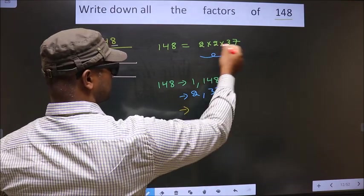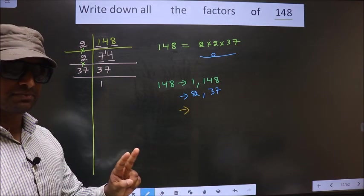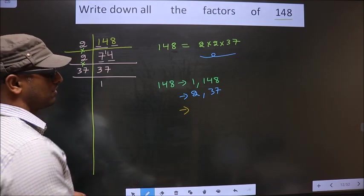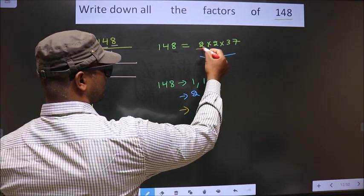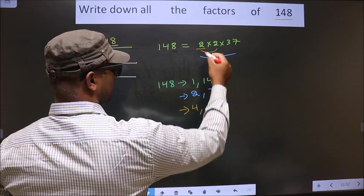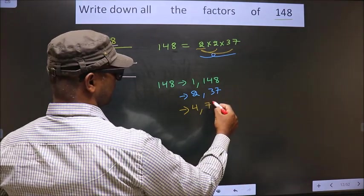Now from these numbers, you take a combination of 2 numbers. How do we do that? See. First, I fix 2. I combine with the 2. So 2 into 2, 4. Now I combine with 37. So 2 into 37, we get 74.